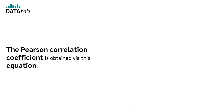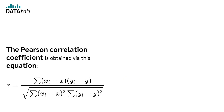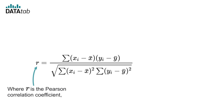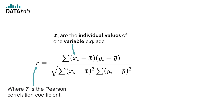How is the Pearson correlation calculated? The Pearson correlation coefficient is obtained via this equation, where r is the Pearson correlation coefficient and Xi are the individual values of one variable.